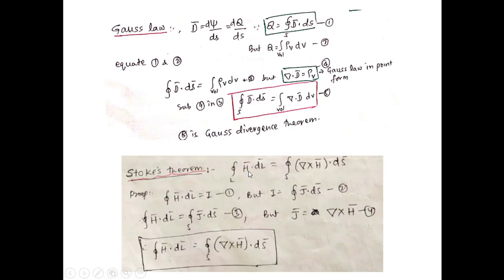Next is Stokes' theorem: the line integral of H bar · dL bar equals the surface integral of curl of H bar · dS bar. Proof: we know I = ∮ H bar · dL bar, and also I = ∫ J bar · dS bar. Equating these: ∮ H bar · dL bar = ∫ J bar · dS bar, and since J bar = curl of H bar, therefore the line integral of H bar · dL bar equals the surface integral of curl of H bar · dS bar.